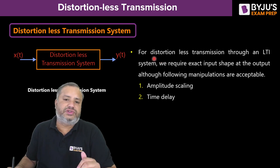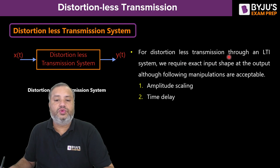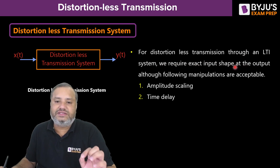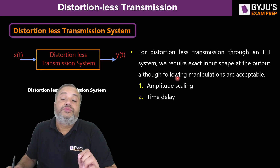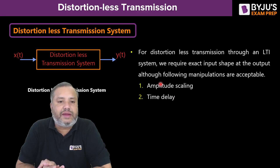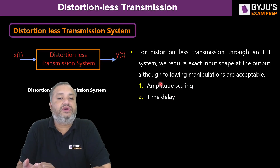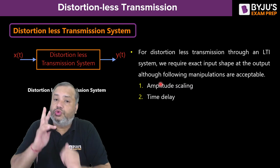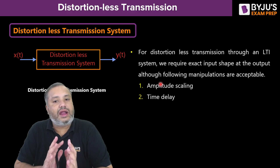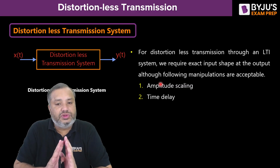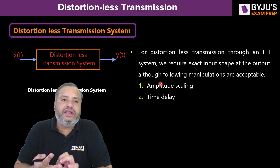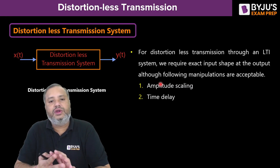For distortionless transmission through an LTI system, we require the exact input to appear at the output — that is, the originality of the signal should be maintained. So even if the signal has undergone amplitude scaling or time delay, we say distortion has not happened. Time delay here means time shifting. Amplitude scaling and time shifting are allowed; no other operation is permitted.